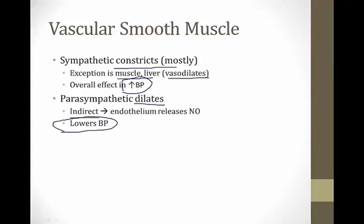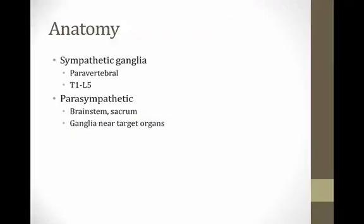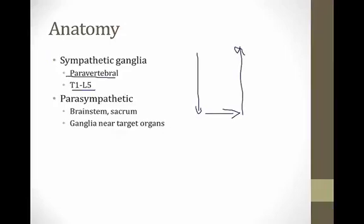Regarding anatomy: for the sympathetic system, nerves exit the spinal cord and synapse at paravertebral ganglia at the level of T1 to L5. For example, to reach the eye, signals must travel down from the brain, exit the spinal cord, synapse in a ganglion, then travel back up — creating many opportunities for pathologic interference, as we'll see with Horner syndrome. The parasympathetic ganglia, by contrast, are found in the brainstem and sacrum, near their target organs.